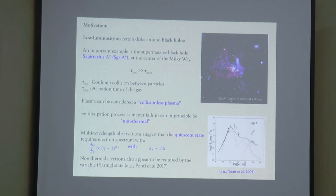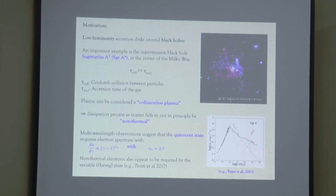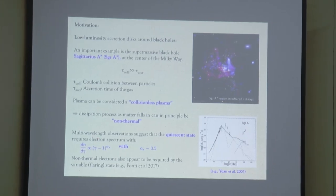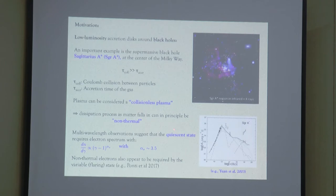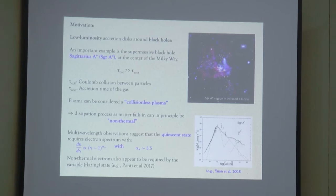From the observational point of view, there are suggestions that the particles falling into the black hole don't necessarily follow a Maxwell-Boltzmann distribution. I want to focus on observations of the quiescent state of Sagittarius A star, where low frequency radio observations show an excess that is explained by assuming a non-thermal tail in the electrons with a spectral index of 3.5.